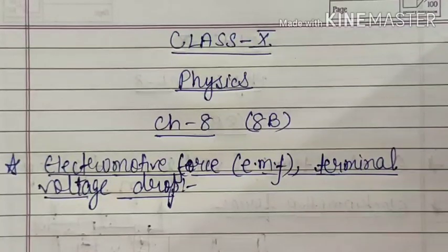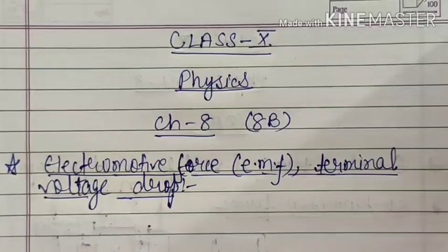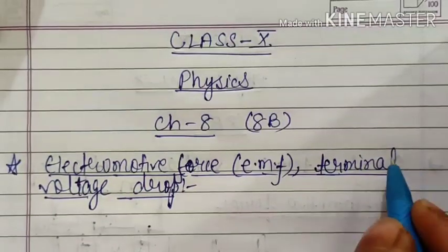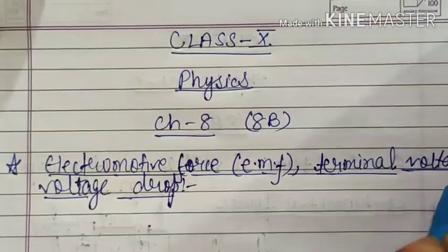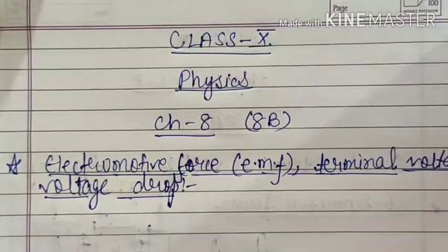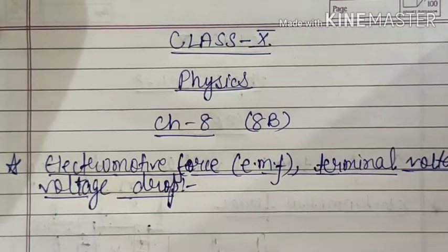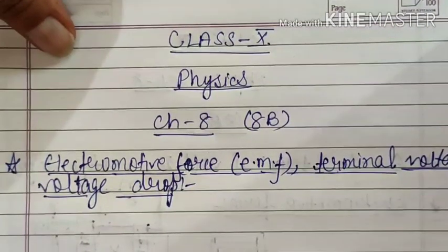In this section we will study about the cell, especially the electrolytic cell. Our first topic is electromotive force, terminal voltage, and voltage drop — where voltage drop is also known as lost voltage. We will start from electromotive force.